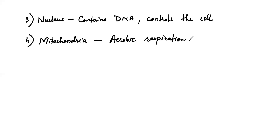A typical animal cell will be having all these organelles, because these four organelles are very important for a cell to function. On the other hand, if I consider plant cells, there will be certain differences in the presence of organelles. Plant cells prepare their own food because of the presence of chloroplast and the process of photosynthesis. There are some organelles which are responsible for making the plant cell differ from the animal cell.